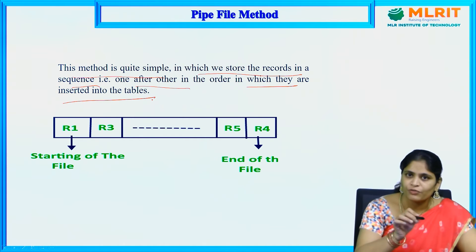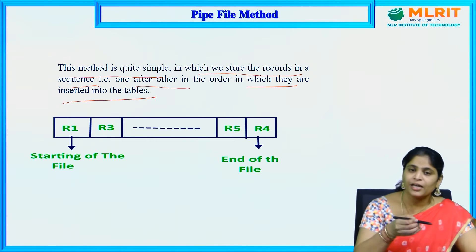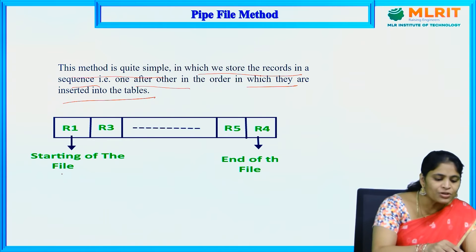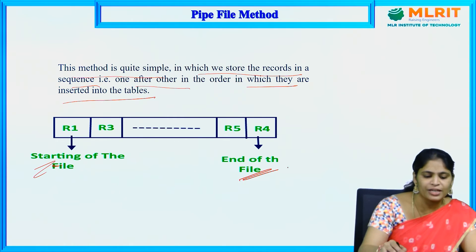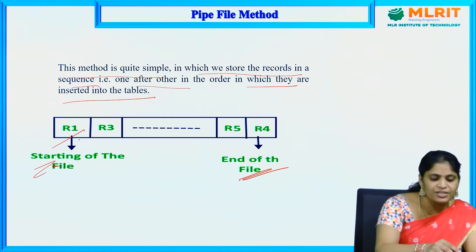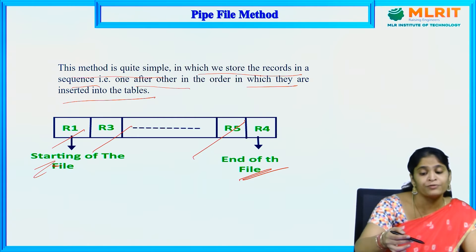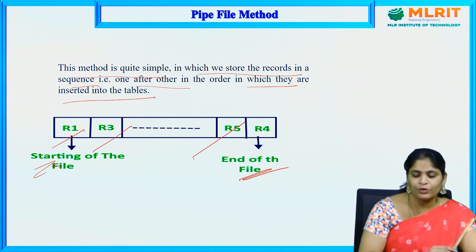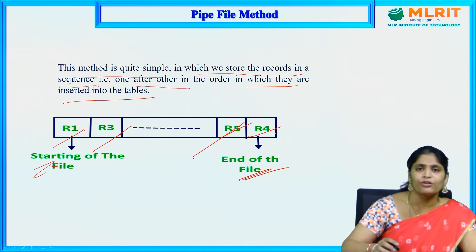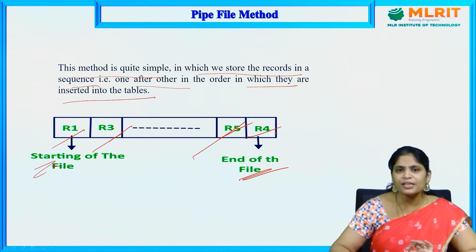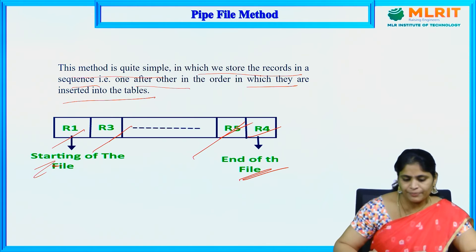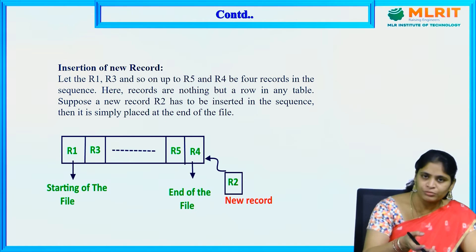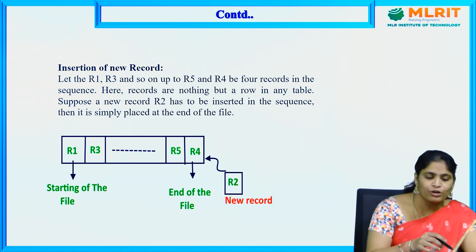The first row will be inserted, then the second row, then the third row in that manner. For example, this is the start of the file and this is the end of the file — the first record R1 is inserted, then R3, then R5, then R4. Records here mean the rows in a particular table. If we have to insert a new record into this pile file organization, let R1, R3, R5, and R4 be four records in the sequence — this is the already existing file.